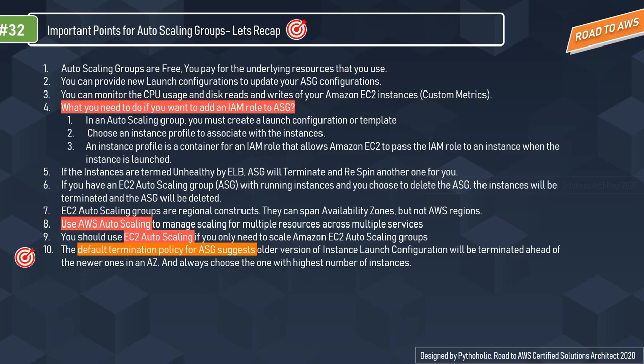EC2 Auto Scaling Groups can span availability zones but not AWS regions. Use AWS Auto Scaling to manage scaling for multiple resources across multiple services - it supports only target tracking scaling policies. Use EC2 Auto Scaling if you only need to scale Amazon EC2 Auto Scaling Groups. There is a clear difference between AWS Auto Scaling and EC2 Auto Scaling.